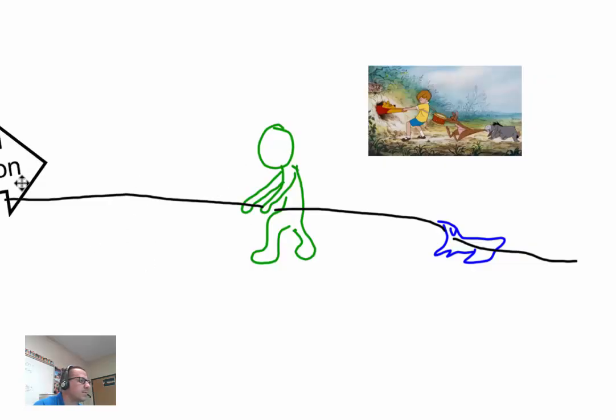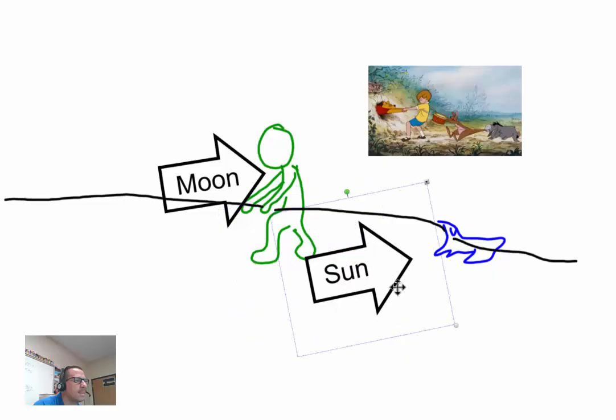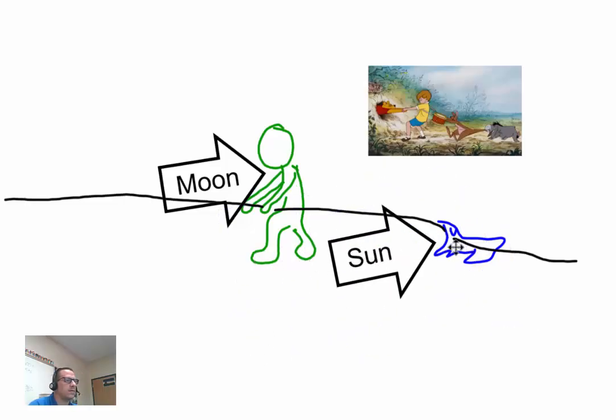That's the same thing that's going on with the Moon and the Sun. So this guy here is pretty much the Moon. And the Sun is this dog right here. It's doing an extra little bit, but not really a whole lot.